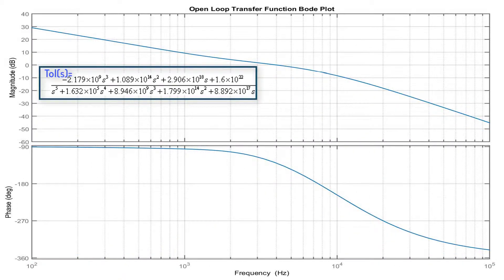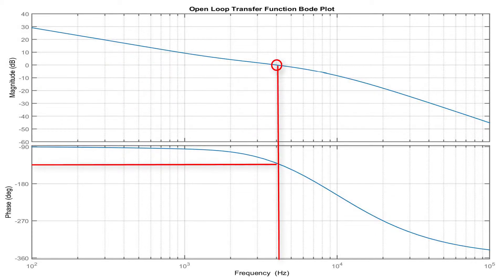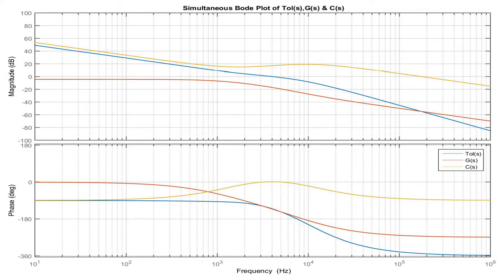As can be seen, the open loop transfer function is stable and the expected phase at crossover is minus 130 degrees. Here, our controller, plant, and open loop transfer functions are simultaneously plotted for reference.